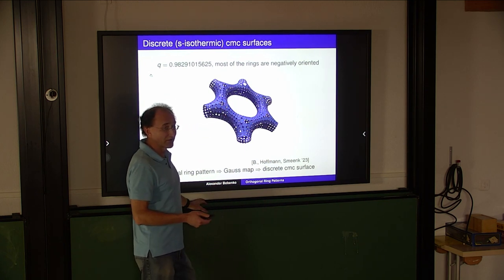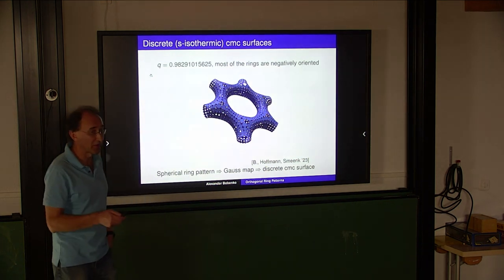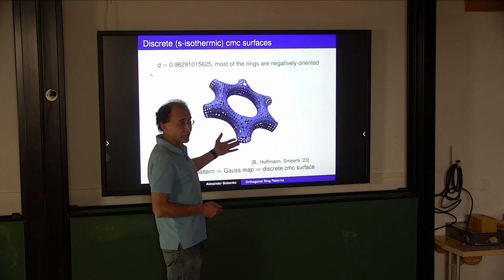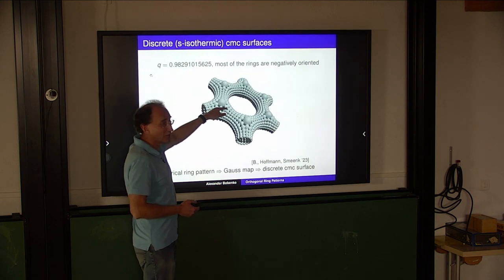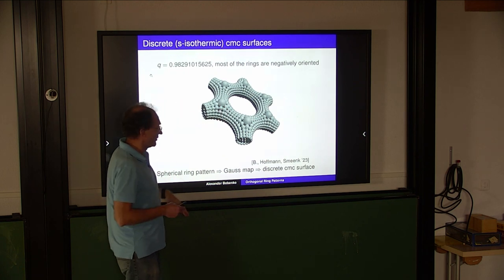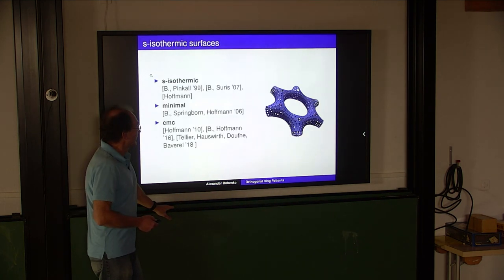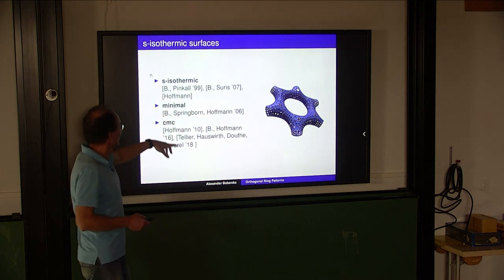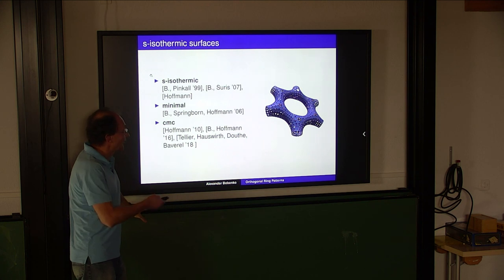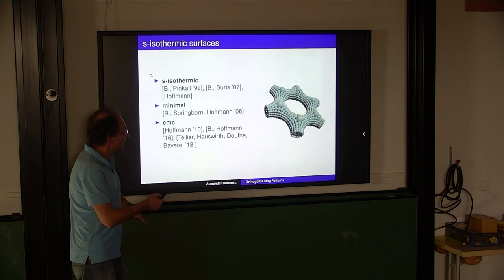In the smooth case, this metric factor - this conformal metric factor - satisfies the elliptic Sinh-Gordon equation with plus in front of Sinh. Here we have a discrete version. So the geometric interpretation for the metric is not the radii of the disks themselves, but the radii of the corresponding orthogonal spheres. These surfaces with disks and spheres are called S-isothermic, and there was research on that, in particular about minimal and constant mean curvature surfaces. Now we have a great tool to construct them: namely these orthogonal ring patterns on the sphere.